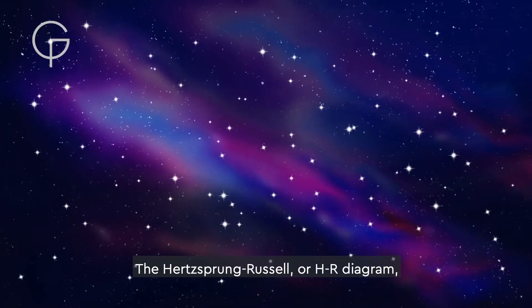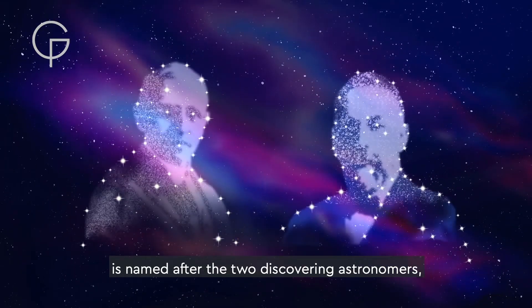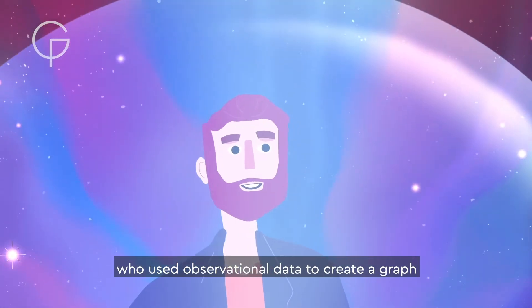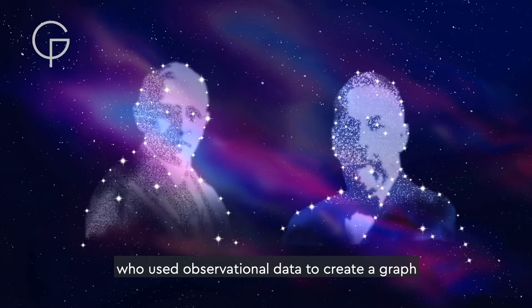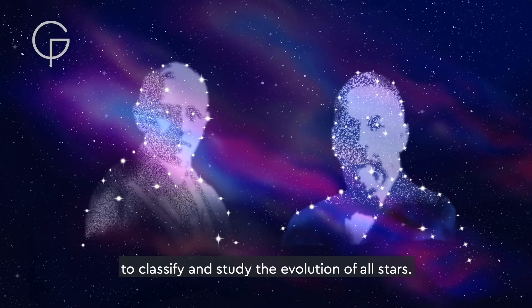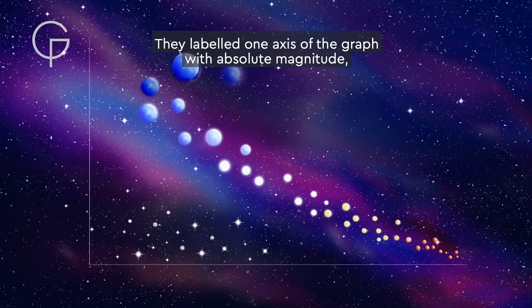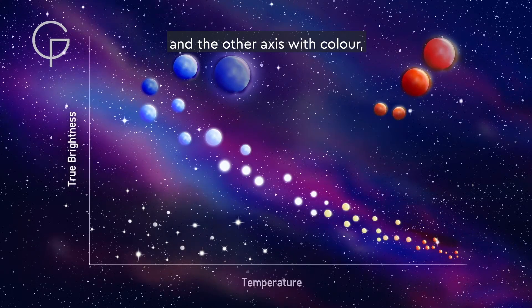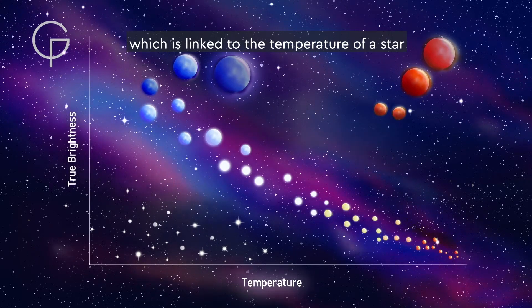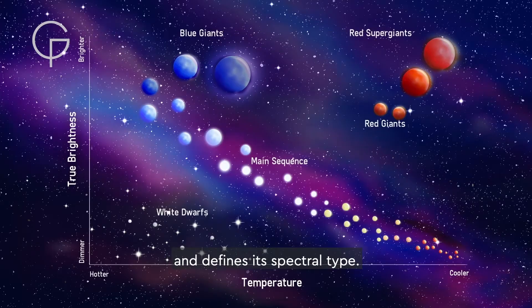The Hertzsprung-Russell, or HR diagram, is named after the two discovering astronomers who used observational data to create a graph to classify and study the evolution of all stars. They labelled one axis of the graph with absolute magnitude, or true brightness of the star, and the other axis with colour, which is linked to the temperature of a star and defines its spectral type.